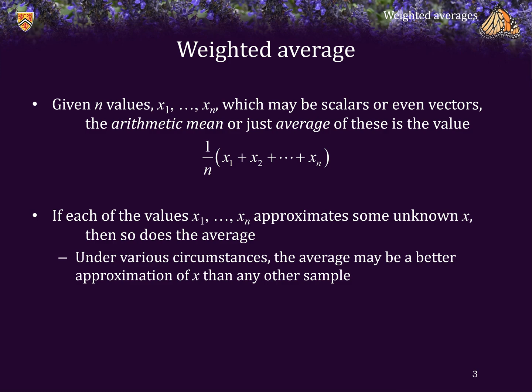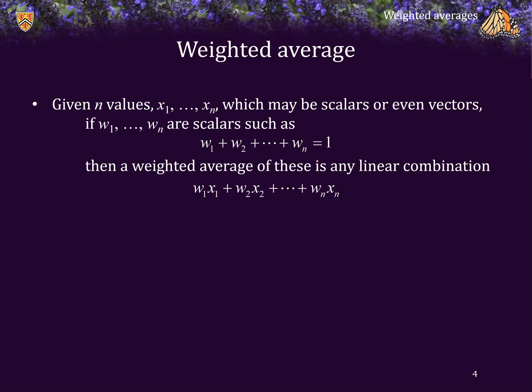Under certain circumstances, the average may actually be a better estimation of X than any one of the samples. Now if instead we have n additional scalars W1 through Wn such that the sum of these weights is equal to 1, then a weighted average of the values X1 through Xn is the linear combination W1 times the first X value plus W2 times the second, all the way up until Wn times Xn.